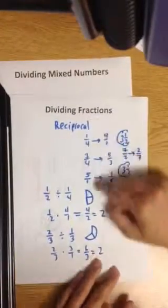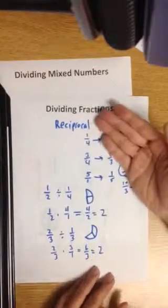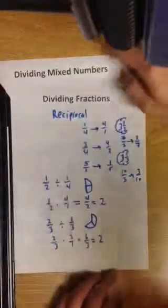And that's how you do dividing fractions. So you flip the second fraction, which is another word for reciprocal, and multiply.